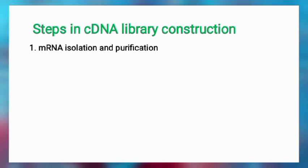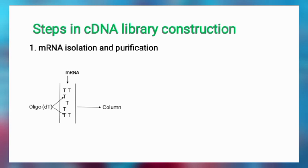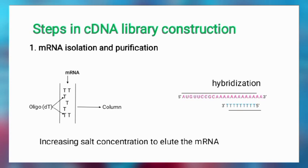Now let's look at the steps involved in cDNA library construction. The first step is mRNA isolation and purification. In purifying the mRNA, a column is packed with oligo-dT molecules — essentially an affinity chromatography column — with oligo-dT as the ligand. The mRNA is passed through the column, and the oligo-dT molecules hybridize with the poly-A tail of the mRNA. After hybridization, the salt concentration in the column is increased to bring about elution of the mRNA from the column.